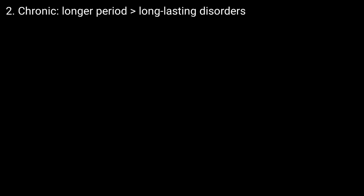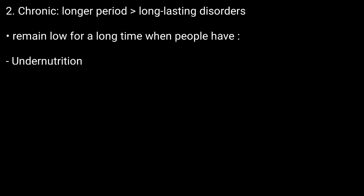The second type is chronic, which occurs for a longer period because of long-lasting disorders. The number of lymphocytes can remain low for a long time when people have undernutrition,